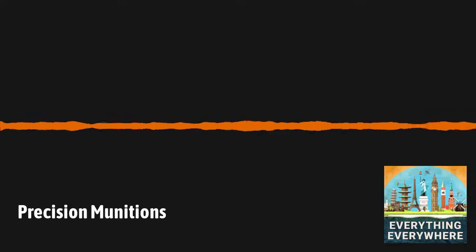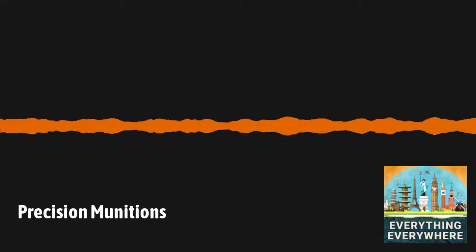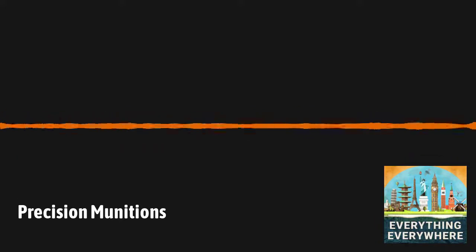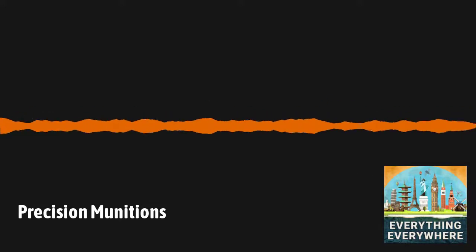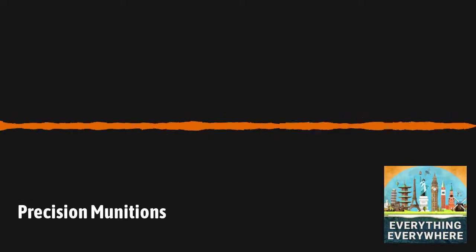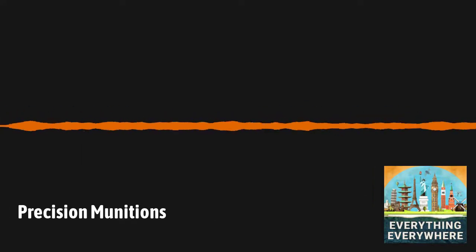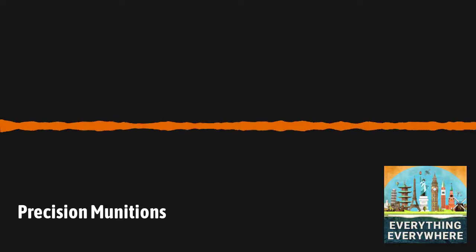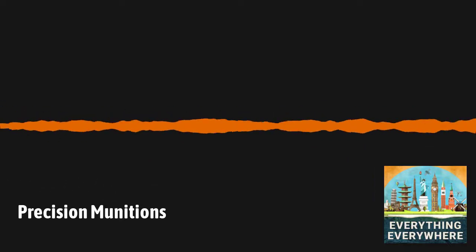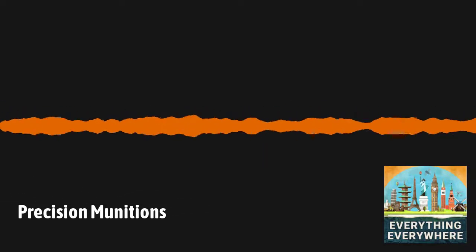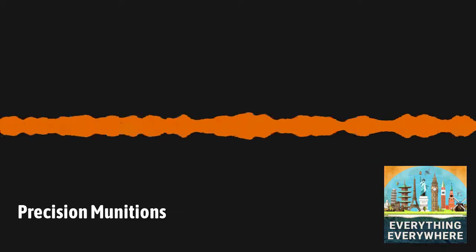This trend has gone even further, and there are now rumors of guided bullets. The Defense Advanced Research Projects Agency, or DARPA, supposedly, and again this is a rumor, designed a .50 caliber guided bullet that could be used by snipers. It's a laser-guided system with laser coming from the gun itself. Reportedly, when it was tested, a novice was able to hit targets as well as an experienced long-distance marksman, even hitting moving targets.